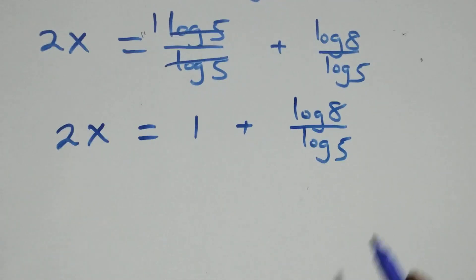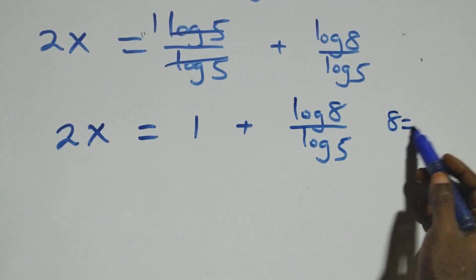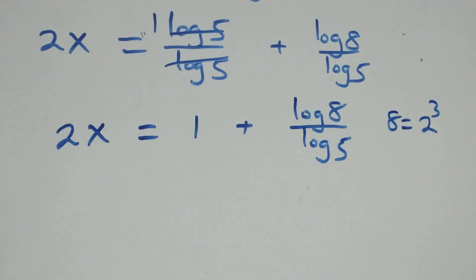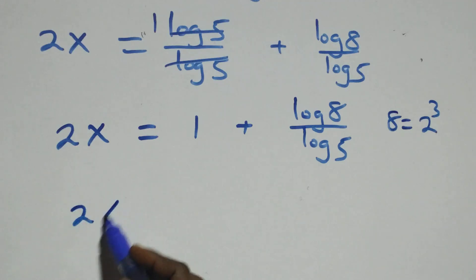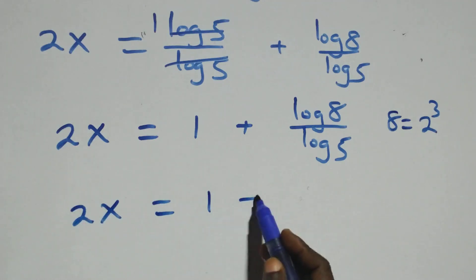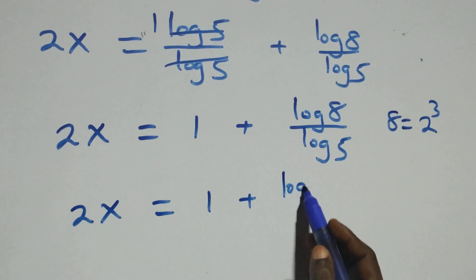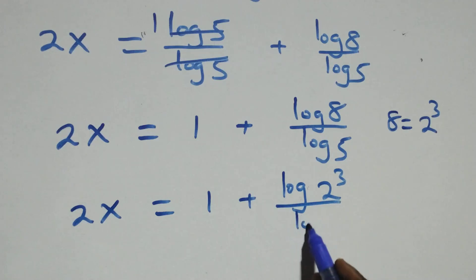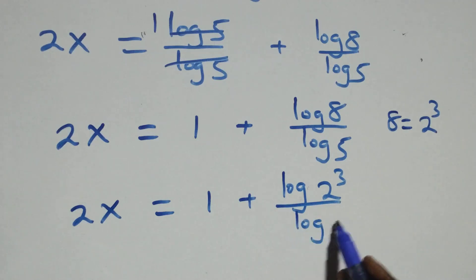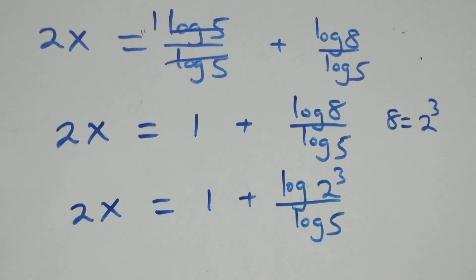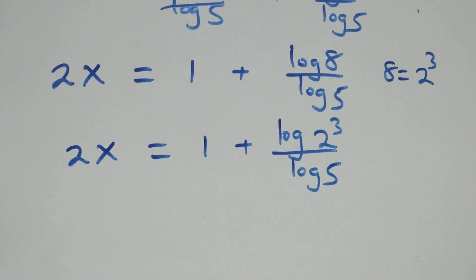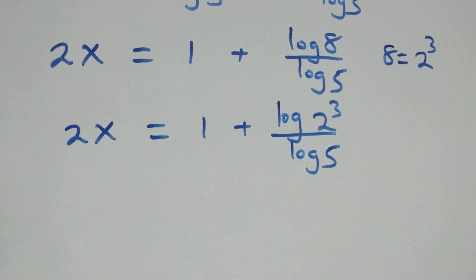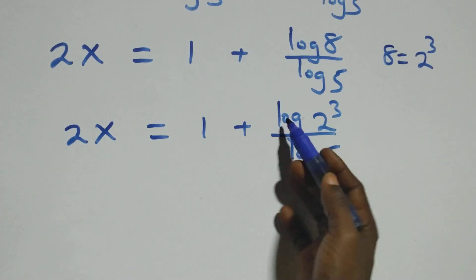Next step, we can also express 8 as 2 times 2 times 2, which is 2 cubed. Now what we have becomes 2x equals 1 plus log(2 cubed) over log 5. We apply the power rule of logarithms, so the power 3 comes down.